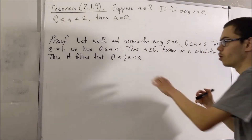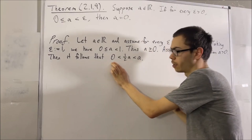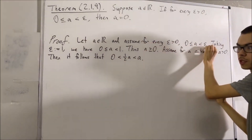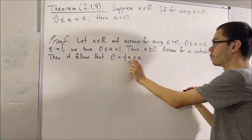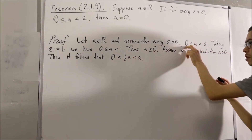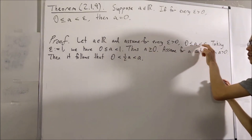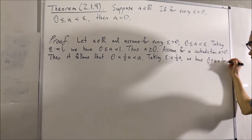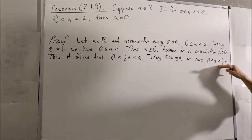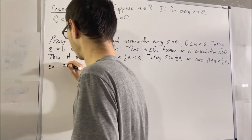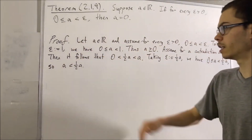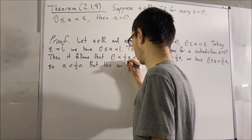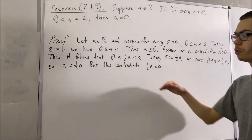Notice that one-half A is a positive real number. But we know that our hypothesis works for every positive real number, so it must work for one-half A. Therefore, we conclude that 0 is less than or equal to A is less than one-half A. So A is less than one-half A. But wait — this contradicts the fact that one-half A is less than A. So we've reached a contradiction.